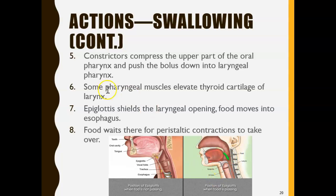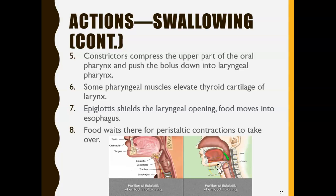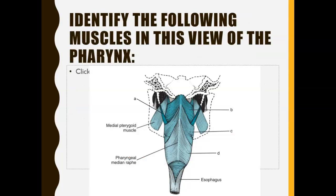Something you may remember from anatomy class is the epiglottis. As food is going down, we want it to go down the esophagus into the digestive tract — we don't want food to go down into our voice box or larynx. The epiglottis seals the laryngeal opening so that food goes down the right way. As the food travels down, there are peristaltic contractions — the food is squeezed down via peristaltic contractions — and then the digestive system takes over.